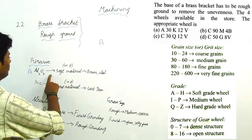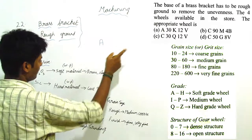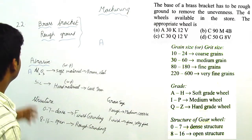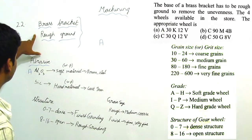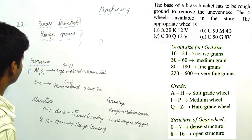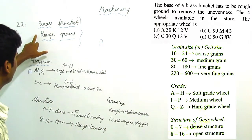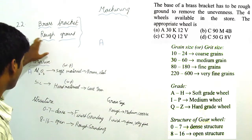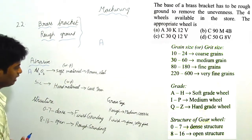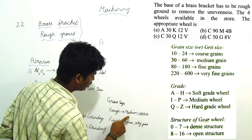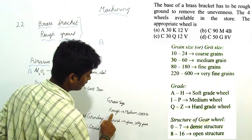From this we can easily find the answer is A. Let's check with respect to grain size. They have given rough grinding. For rough grinding, it should be medium or coarse grain.